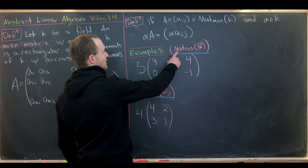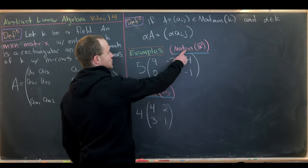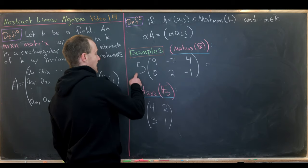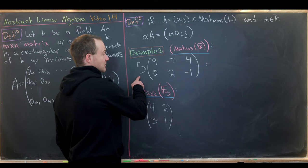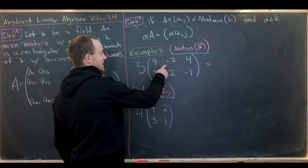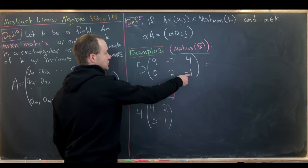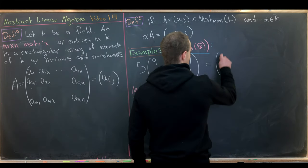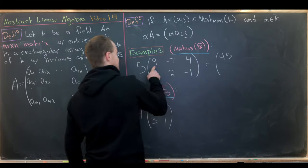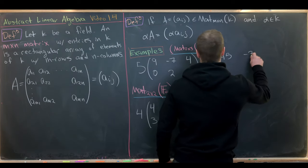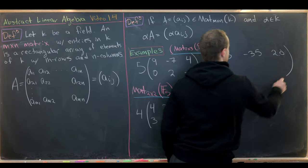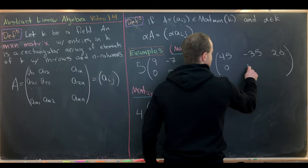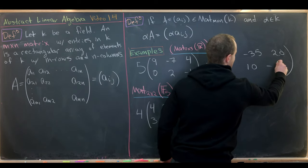For the first example, working over 2 by 3 matrices with entries in R: we scalar multiply 5 with the matrix [9, −7, 4; 0, 2, −1]. Multiplying through gives us 45, negative 35, 20, zero, 10, and negative 5. That's really all there is to scalar multiplication.